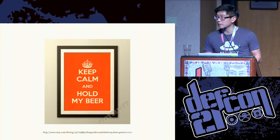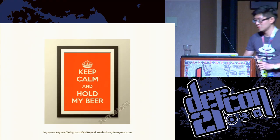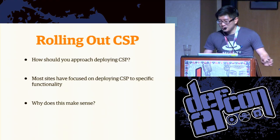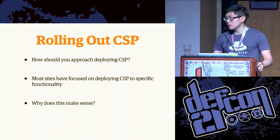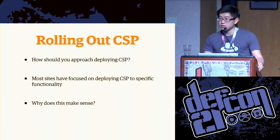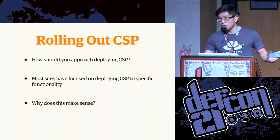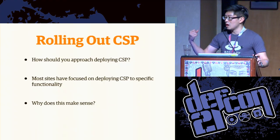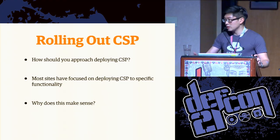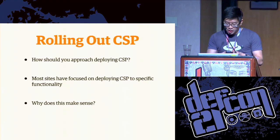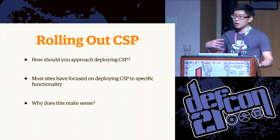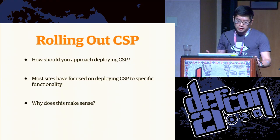Let me talk about some real-world implications of deploying a content security policy to your production website. There are a couple of questions you probably have if you're thinking about rolling out a content security policy: how should you go about rolling it out, how should you test the validity of your policy, and what parts of the site should you apply it to? A number of websites such as Twitter have chosen to focus their content security policy on specific segments of their website. This makes a lot of sense from a metrics standpoint because it gives you a very focused approach to applying and fixing the issues your content security policy detects.